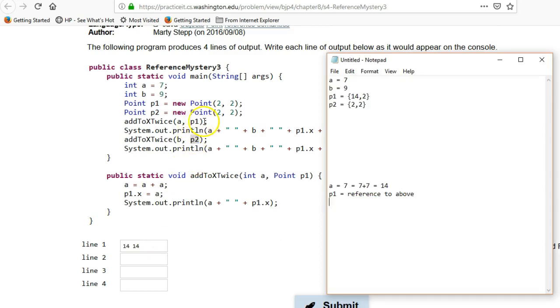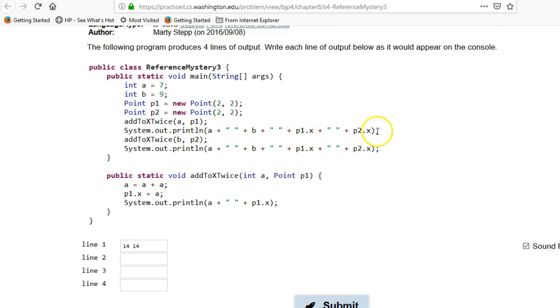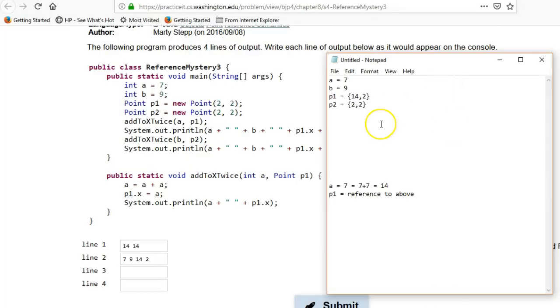And let's go back. So after recalling that there, then it's gonna print out a, b, p1.x, and p2.x. So that's gonna print out a is still 7 here, b is still 9, p1.x is 14, and then p2.x is still 2. Let's go back to looking at our variables.